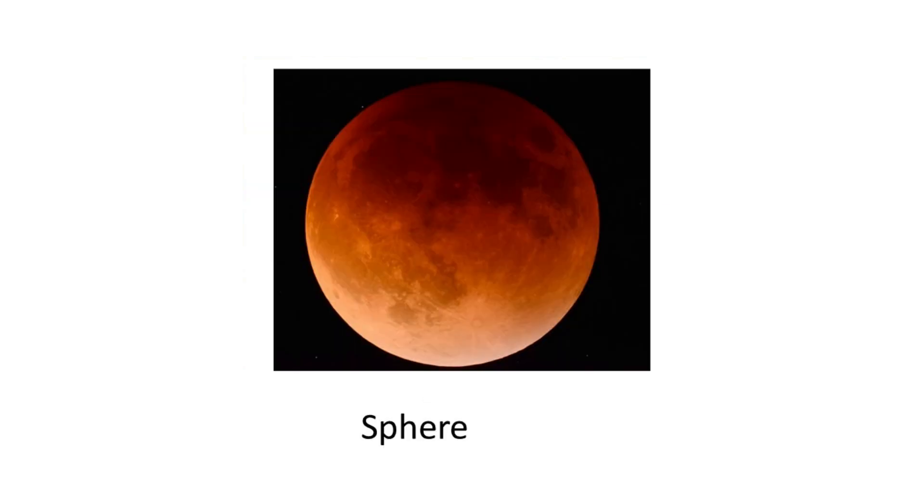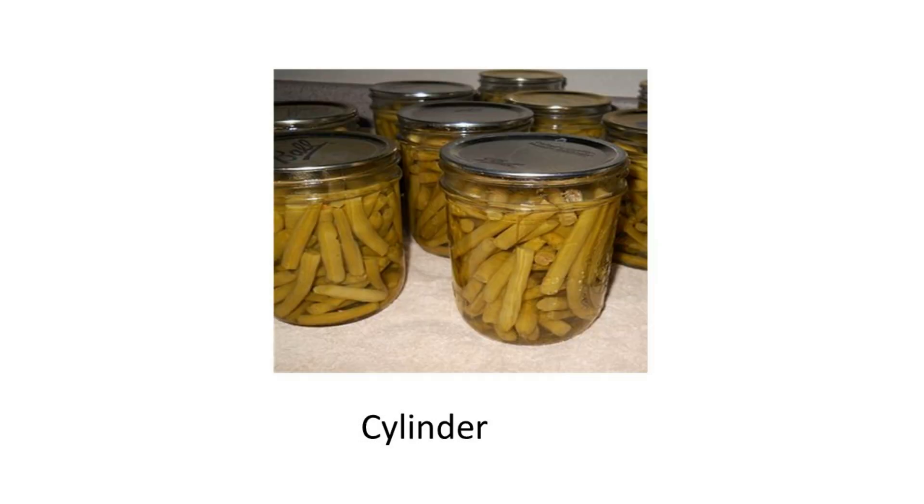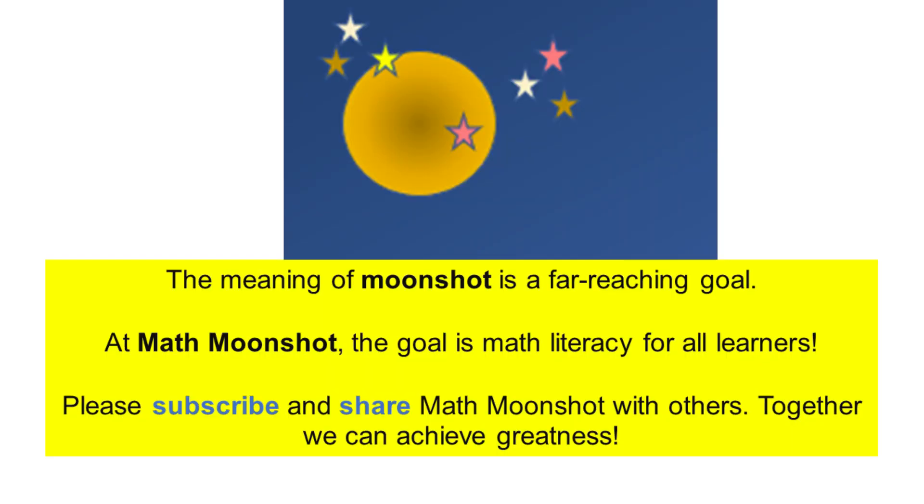The moon looks like a sphere. The pickle jars have a cylindrical shape. Thanks for investigating three-dimensional shapes with me. Watch out for more Math Moonshot videos about shapes. Please subscribe to Math Moonshot and share with others. Together, we can achieve greatness.